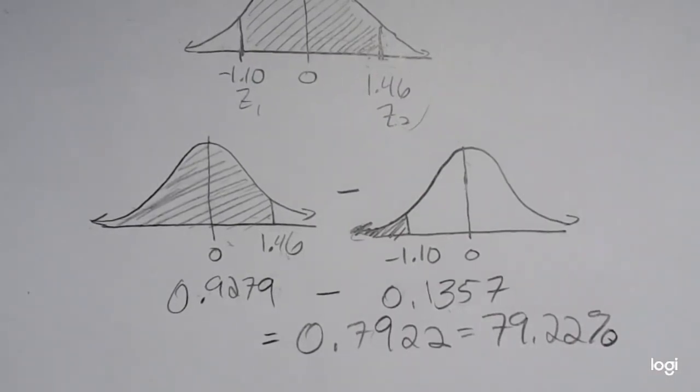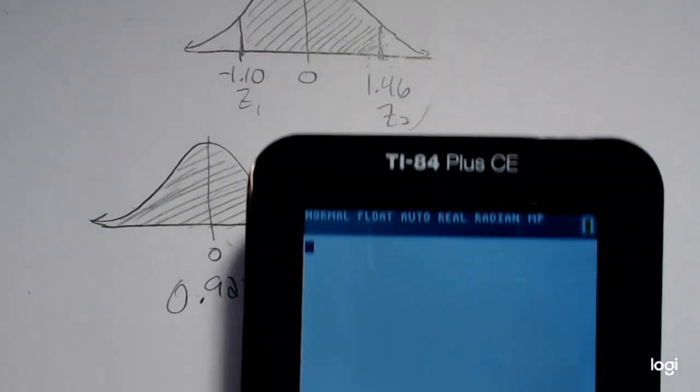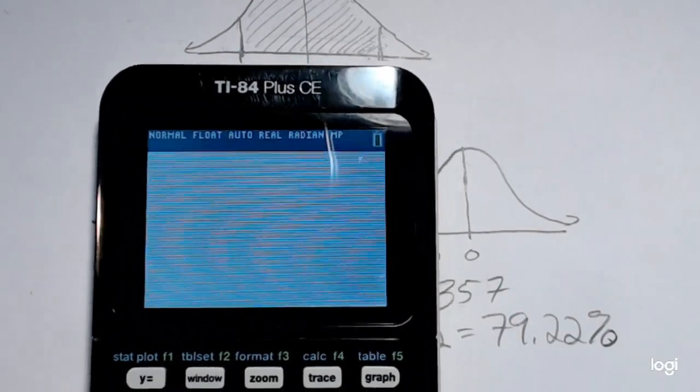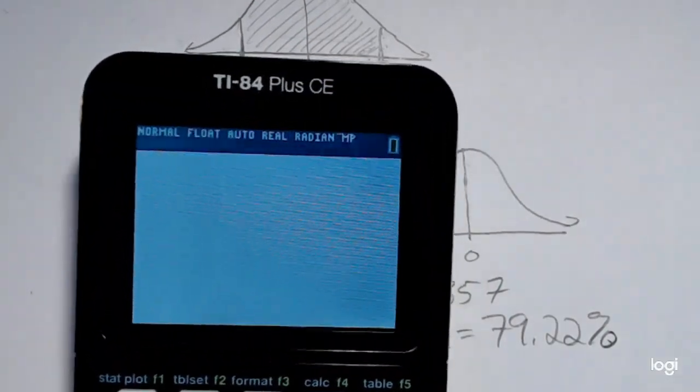That's how you use a standard normal table. It's a little bit clunky, but it gets the job done. If you have a TI-84 calculator, it's pretty straightforward.